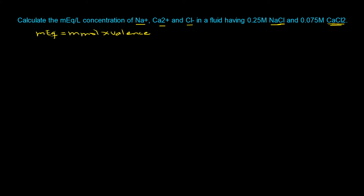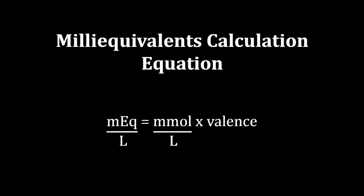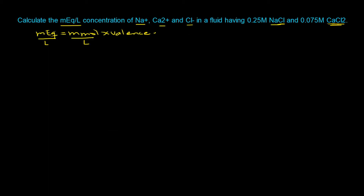Because we are looking for milliequivalents per liter, which is a concentration, we can use the derivative of this equation by dividing both sides by volume in liters. So we have milliequivalents per liter equal to millimoles per liter times valence, which lets us convert molarity into millimoles per liter.